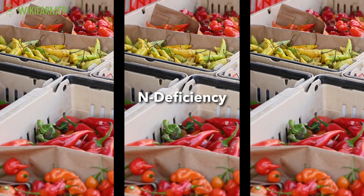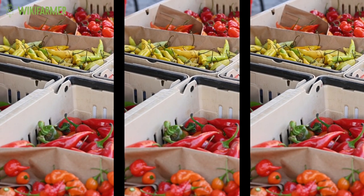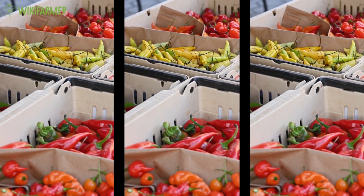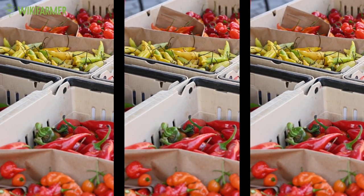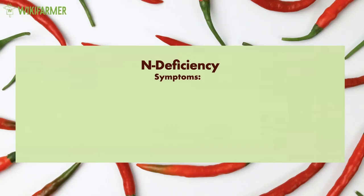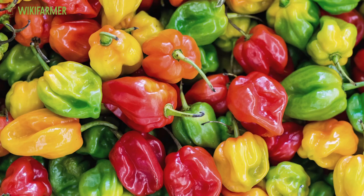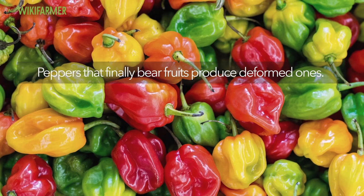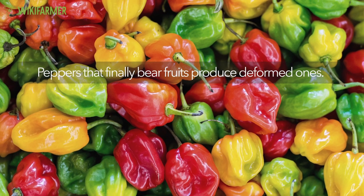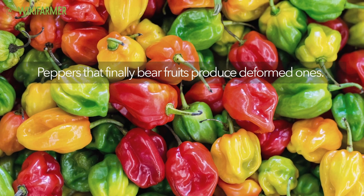Nitrogen Deficiency. Pepper plants with nitrogen deficiency express their problem with symptoms such as small and yellow leaves, decreased growth rate, fewer flowers, and decreased or zero fruit setting. Peppers that finally bear fruits produce deformed ones.